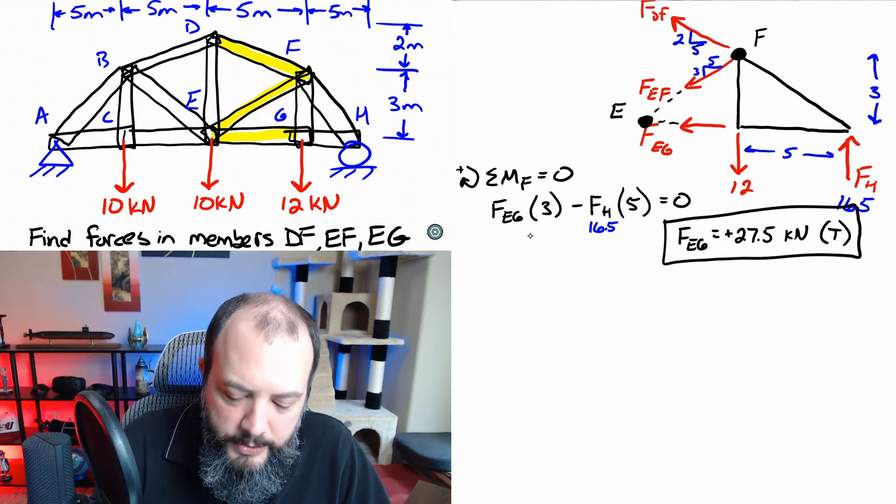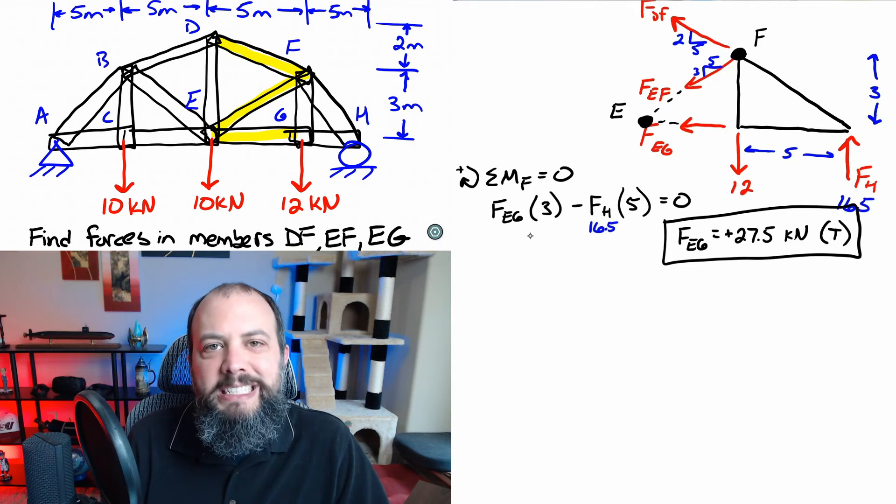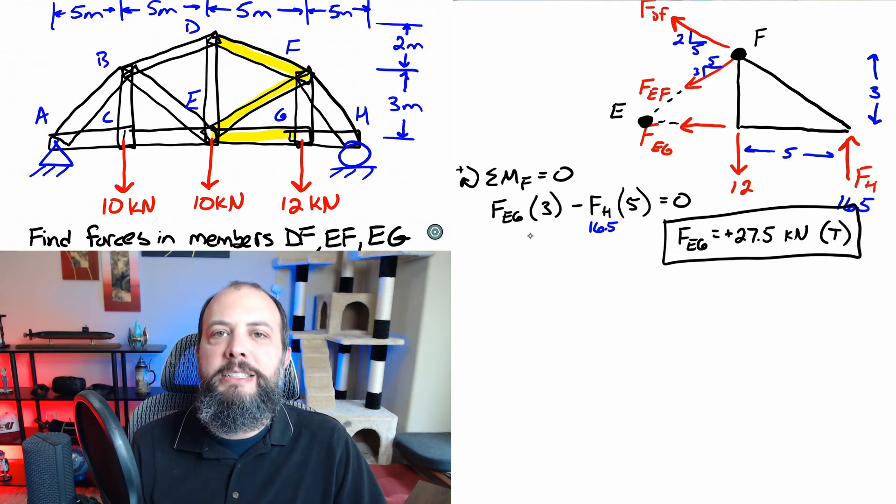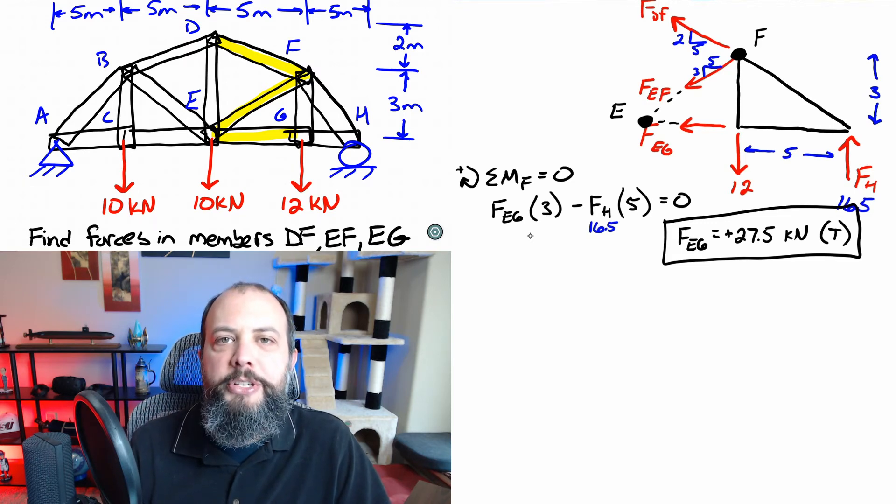And that's going to be with this new dot that I've drawn on the drawing which is point E. Point E isn't even on this right hand section but you can still use it as a point to sum moments around. You don't have to sum moments only at a point on your drawing. You can sum moments about any point in space. And since two of our forces intersect at point E that will isolate FDF as the only unknown in a moment equation there.